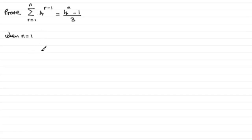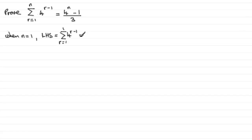So we start with when n equals 1. We test the left hand side. The left hand side, LHS, is going to be equal to the sum of 4 to the power r minus 1, with r going from 1 to 1. It's just a series with one term: 4 to the power 1 minus 1, which is 4 to the power 0. And anything to the power 0 is going to be 1.